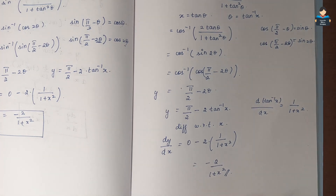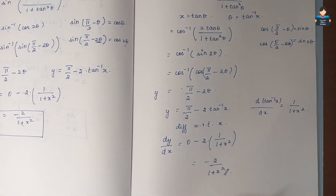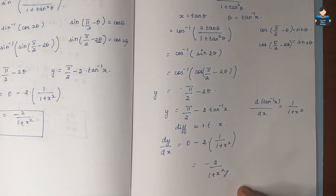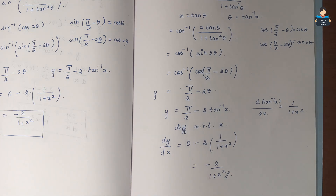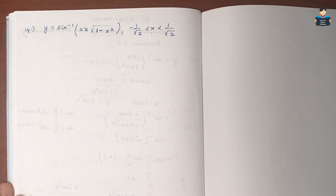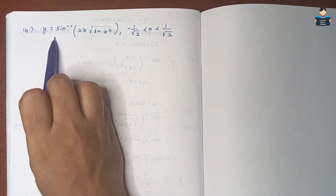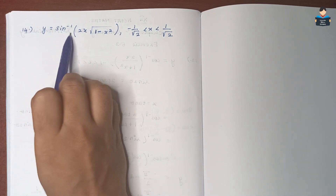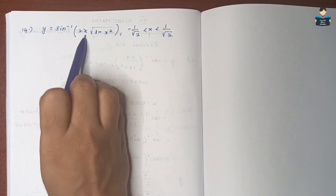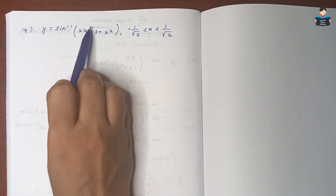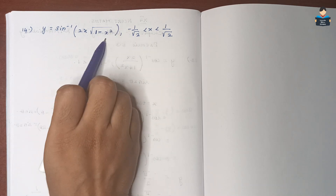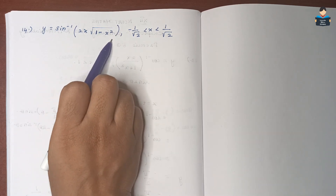This is the final answer for question 13. Next, question number 14: y equals sin inverse of 2x times square root of 1 minus x square.